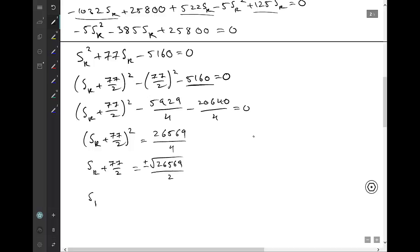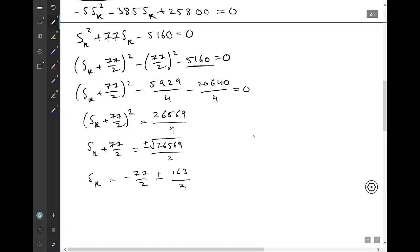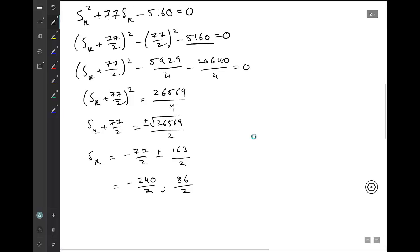Now fortunately for us, square root of 26569 is quite a nice number so we end up with negative 77 on 2 plus minus 163 on 2. So our two possible answers are either negative 240 on 2 or positive 86 on 2. Now for obvious reasons a negative answer is not feasible in this case because we're looking at a speed.